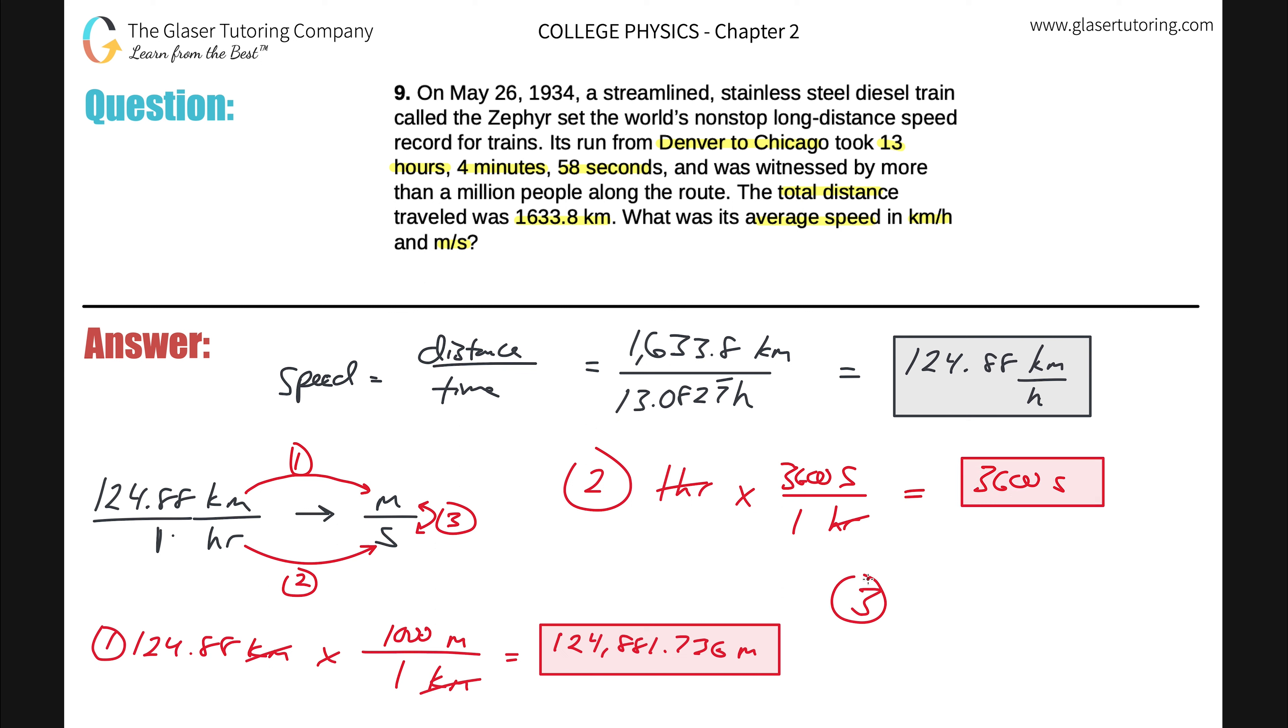And now for the grand finale, take the meters that you have, the 124,881.736 meters, divided by the 3600 seconds. And that's going to get you meters per second. So let's do that division. And we come up with a value of 34.689, and that's going to be in meters per second. So we round all the way at the end to five significant figures. The reason being is because we have five significant figures in the given distance value. Anyway, those would be the two answers in kilometers per hour and meters per second.